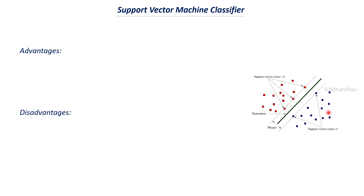Now let us discuss the advantages and disadvantages of support vector machines. Understanding these helps us choose the best model for a given problem. When working on a dataset, we need to know which model suits it best. Understanding the advantages and disadvantages of each model is part of the model selection process. In previous videos on linear regression and logistic regression, we covered their respective advantages and disadvantages; now let us do the same for the SVM classifier.